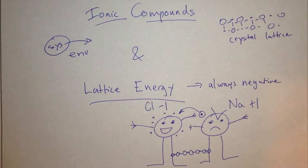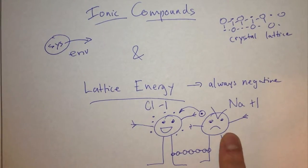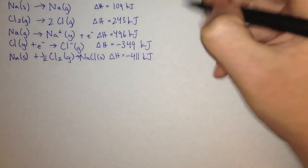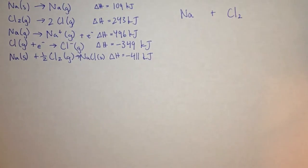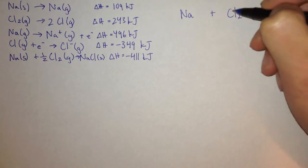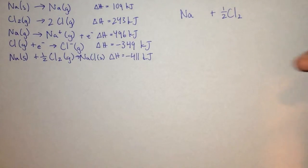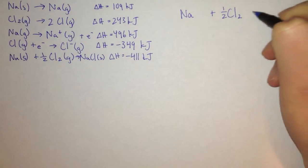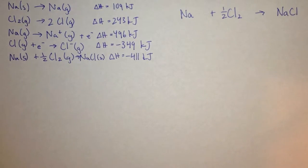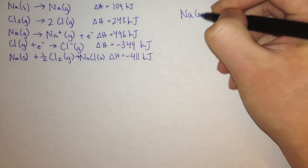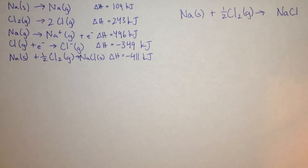With that in mind, let's write an equation for the reaction between sodium and chlorine. We take sodium and chlorine — chlorine comes as Cl2 because it's a diatomic, and we only need one half of it because we only need one chlorine atom — and that gives us 1 NaCl. At room temperature, sodium comes as a solid and chlorine comes as a gas, and in the end we want a solid NaCl — solid salt.